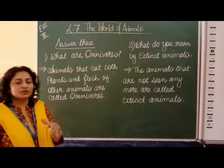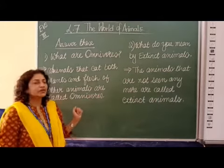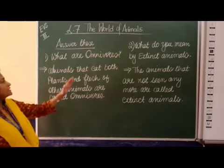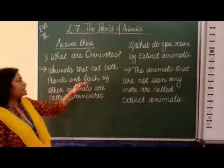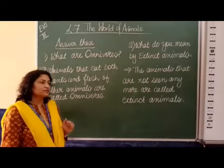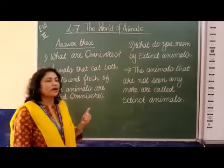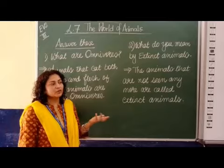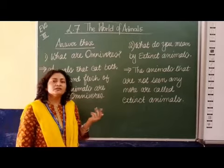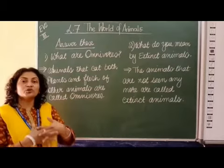I have taken some questions from your textbooks and some extra I have given for your knowledge. Now, what are omnivores? As you know, animals that eat both plants and flesh or other animals are called omnivores. That means they eat both flesh and plants. Even we humans are also omnivores.